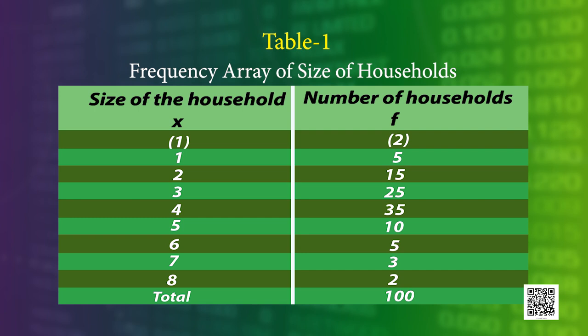Column 1 of the table gives the values which the variable x, i.e., size of the household, takes, and column 2 gives the corresponding frequency, i.e., the number of households. Thus, there are 5 households whose size is 1, there are 15 households of size 2 and so on. Thus, the table gives the frequency array of sizes of households.